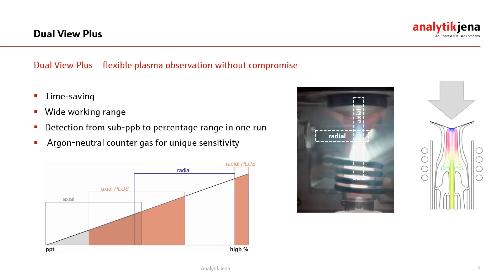The analysis of trace elements and major constituents requires different plasma observation modes and the flexibility to apply any mode to any emission line in a single method. Our dual view plus option enables free selection of the radial and axial plasma view and additionally allows use of them in an attenuated mode. With this concept it is possible to perform a synchronous analysis of contents ranging from the sub-ppb to the high weight percent. The intelligent argon neutral counter gas technology provides highest sensitivity in axial observation and allows for robust and economic trace element detection — using the argon that purges the high resolution optics to remove the plasma tail, which is known to cause spectral interferences and reduce overall sensitivity.